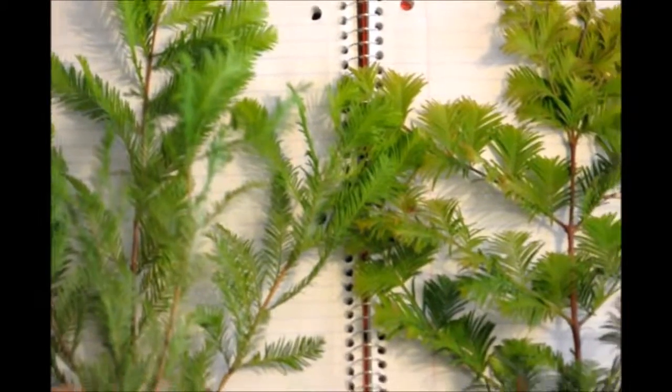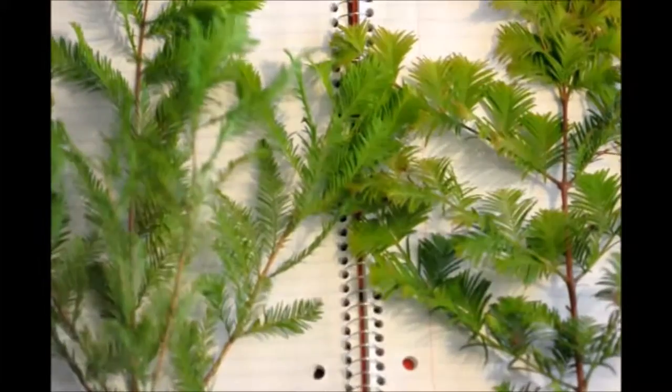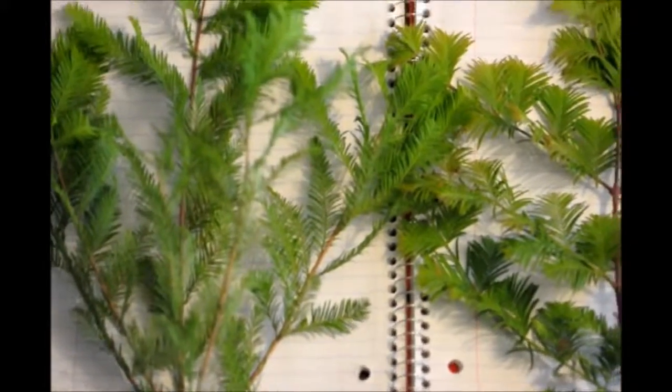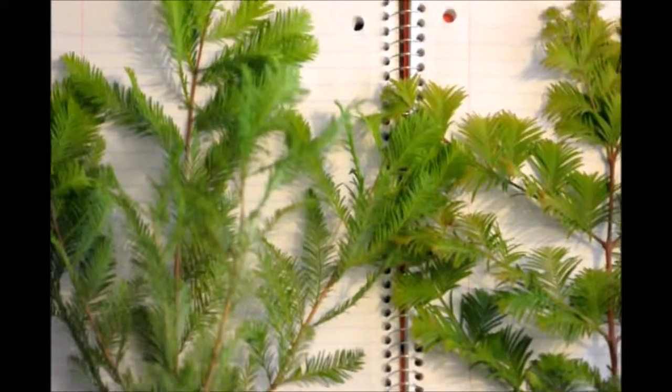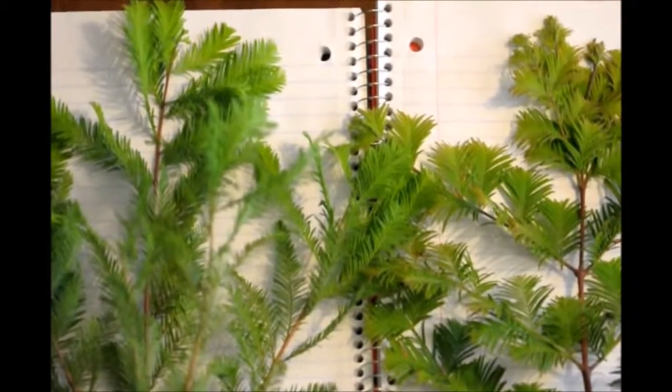They both have green foliage. They both have a browner bark to them. They both are a deciduous conifer, which means that they have cones and they lose their leaves in the wintertime.